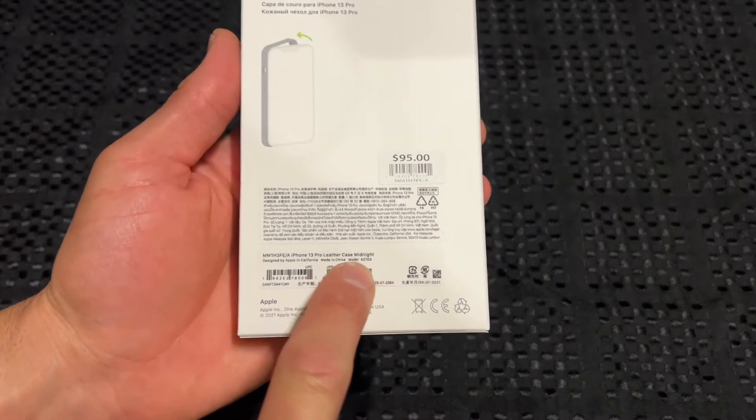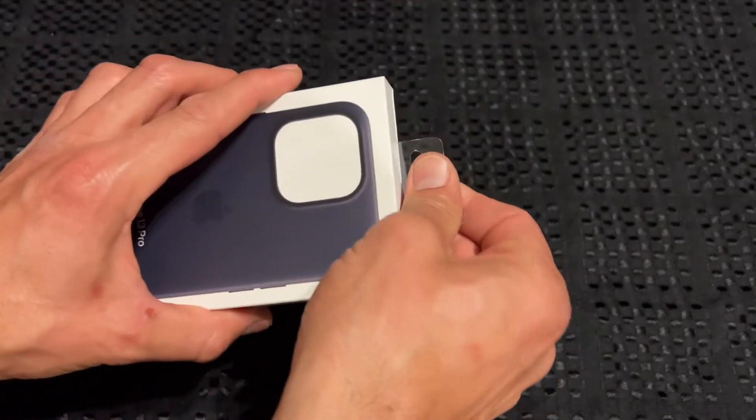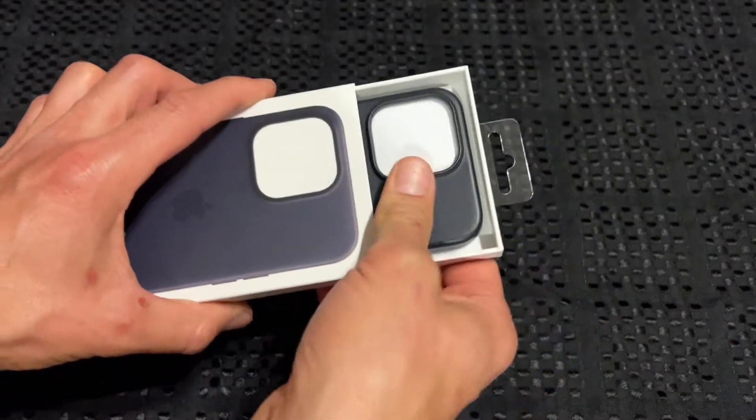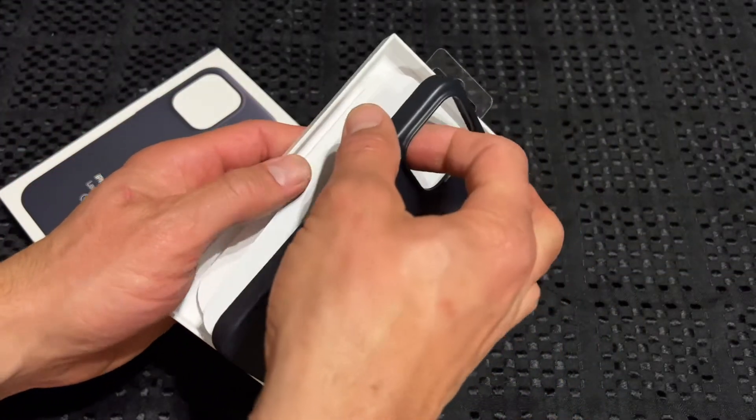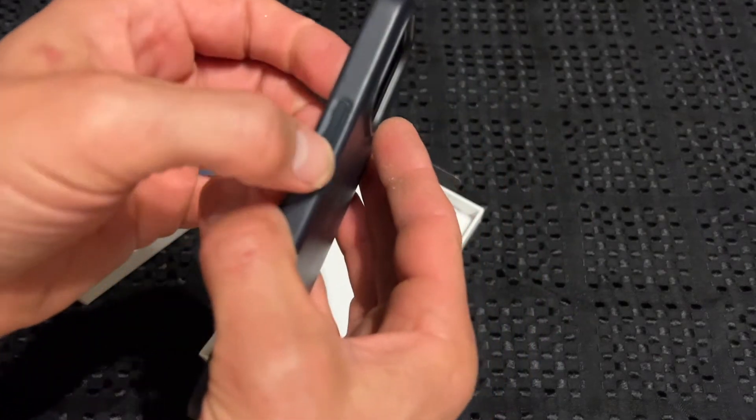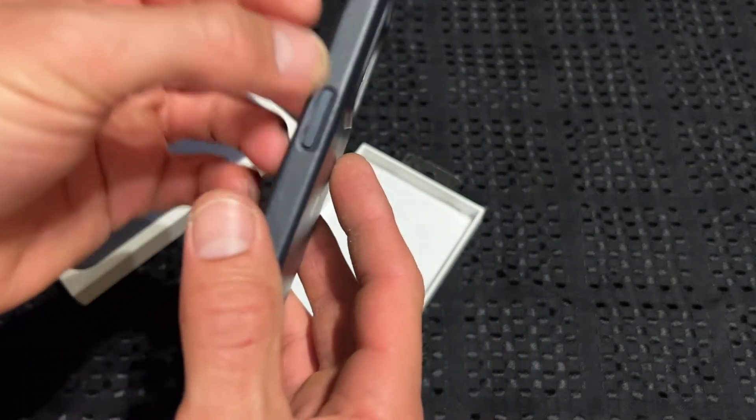It says right there, leather case midnight. So let's just get this out quickly. Not much to it, pretty simple packaging. It's got the big massive new camera cutout in there, the nice metal feel buttons.